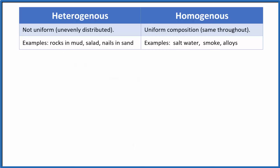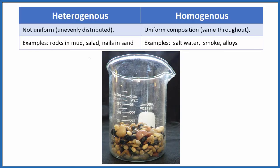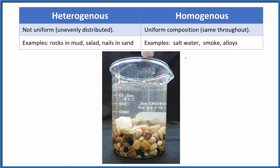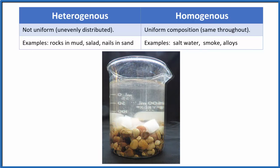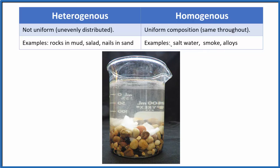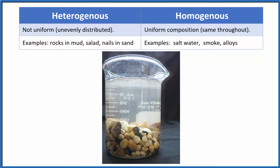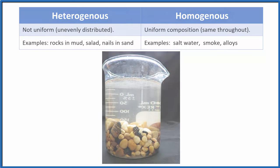To recap: heterogeneous means it's clumped together and not evenly distributed, like our rocks at the bottom of a beaker with water. Homogeneous means it's smoother, more spread out, with a uniform composition — like sugar dissolved in water. This is Dr. B with the difference between heterogeneous and homogeneous. Thanks for watching.